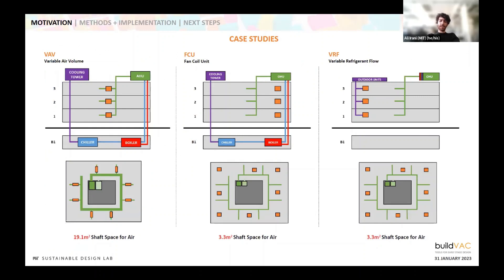We look at another case study: a three-story medium office building — the typical Department of Energy three-story medium office building, which we'll use throughout this presentation. We selected three different HVAC system options for this prototypical building: the VAV system, fan coils, and VRF — variable refrigerant flow. In this slide we're comparing the riser area required — how much area is needed in the core to support these three HVAC systems. We move from a VAV system that requires almost 20 square meters of shaft space just for the air, to something that's more like 3.3 square meters of shaft space for the VRF system.